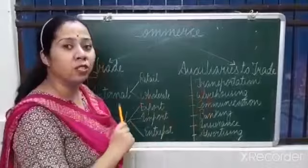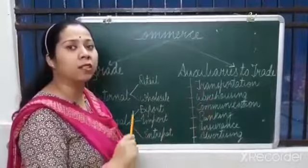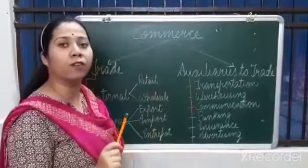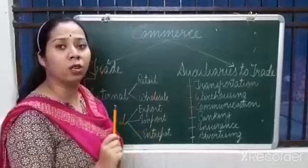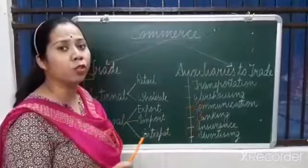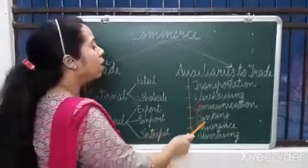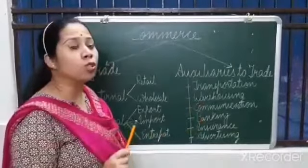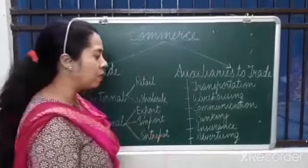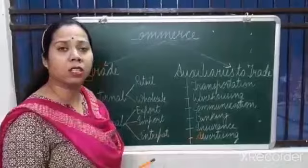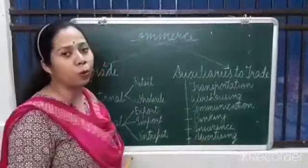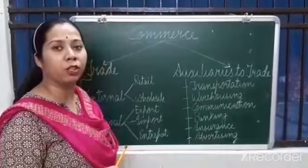To summarize the auxiliaries to trade: transportation is for movement of raw materials and finished goods; warehousing is for storage and continuous supply; communication passes information from producers to wholesalers to retailers; banking provides loans, deposit facilities, and cheque clearing; insurance covers risks like theft and fire; and advertising promotes products and informs consumers about availability.